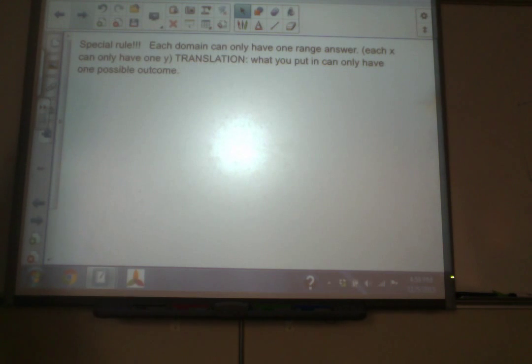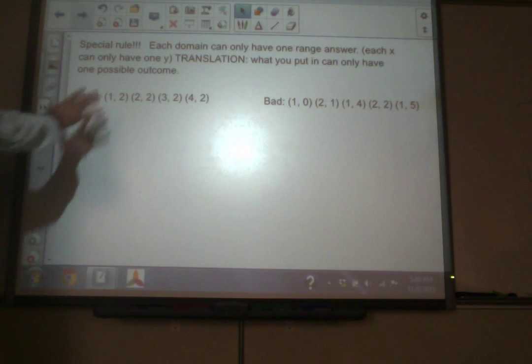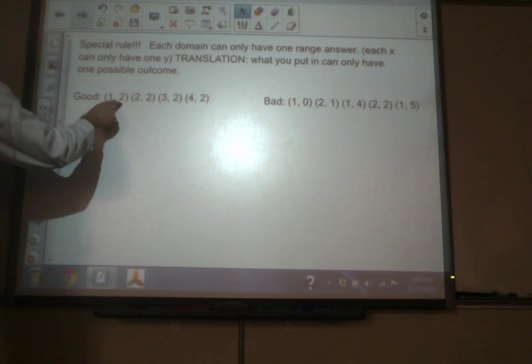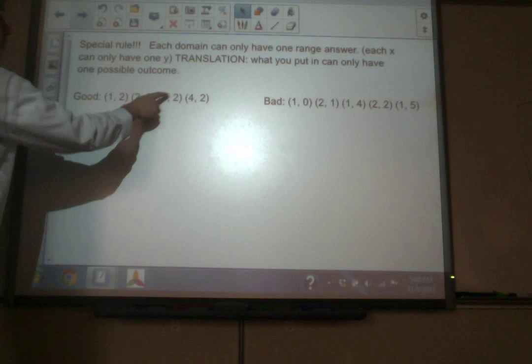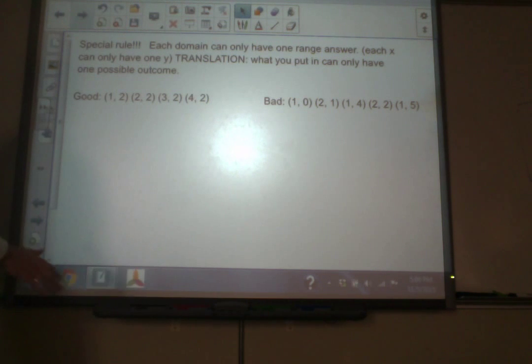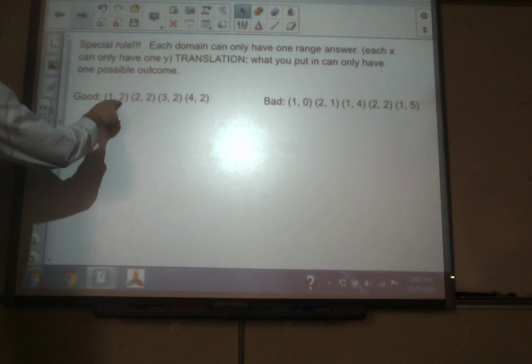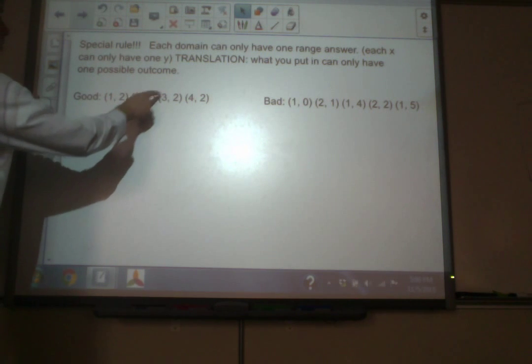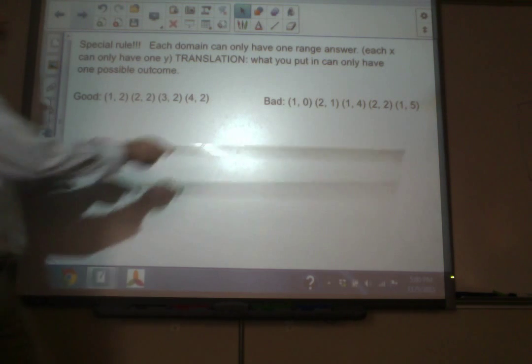Now we have a special rule when it comes to functions. And that is that each domain can only have one range answer. Basically, each x can only have one y. Going back to the oven metaphor, when you put something in, only one possible thing is ever going to come out. So, for example, this is fine. This is a good example. When we put in 1, we get 2. When we put in 2, we get 2. When we put in 3, we get 2. When we put in 4, we get 2. That's fine, because when we put in a 1, there was still only one possible answer. When we put in a 2, there was only one answer. 3, one answer. 4, one answer.